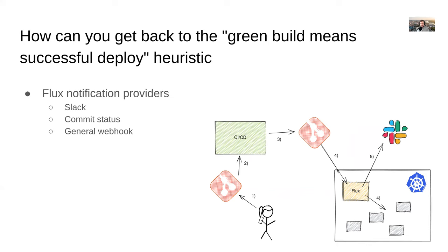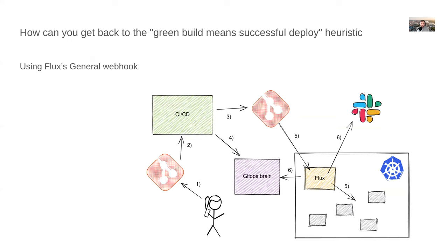Flux works in an asynchronous, decoupled way — it looks at the repo and deploys on its own schedule. Even though it can do some notifications, CI/CD doesn't know anything about that action, whether it succeeded or failed. This is what this meetup is about: how to reconstruct the 'green build means successful deploy' heuristic — your mental model that if CI is green, your code is deployed.